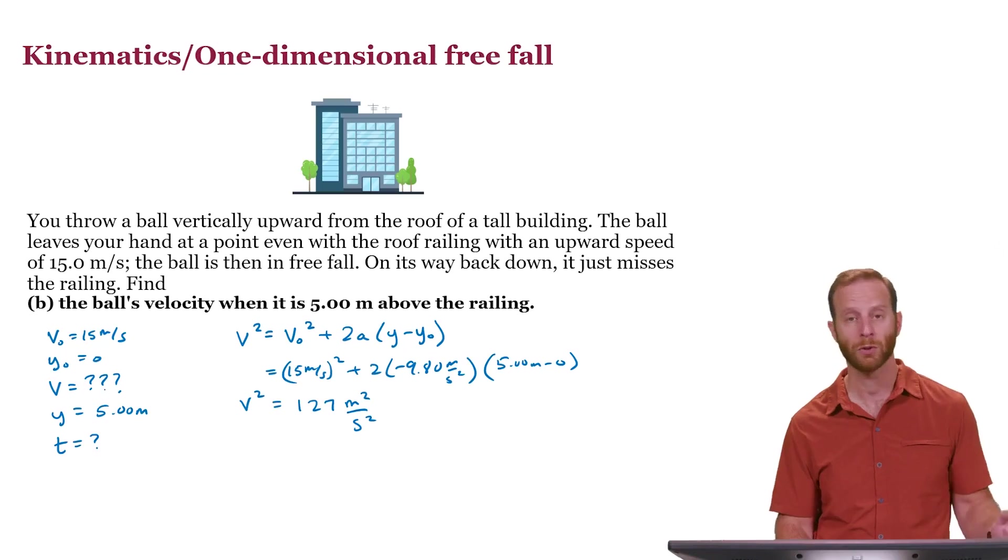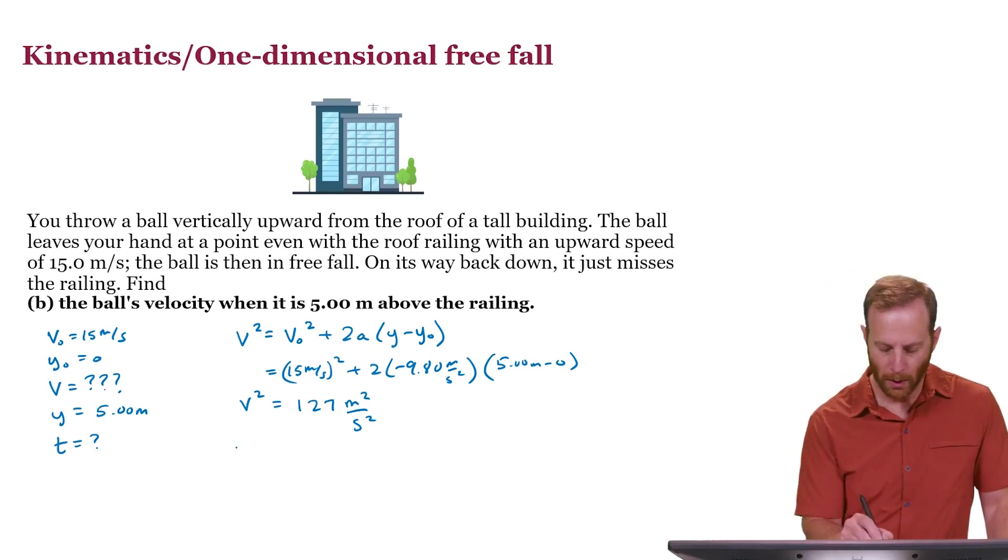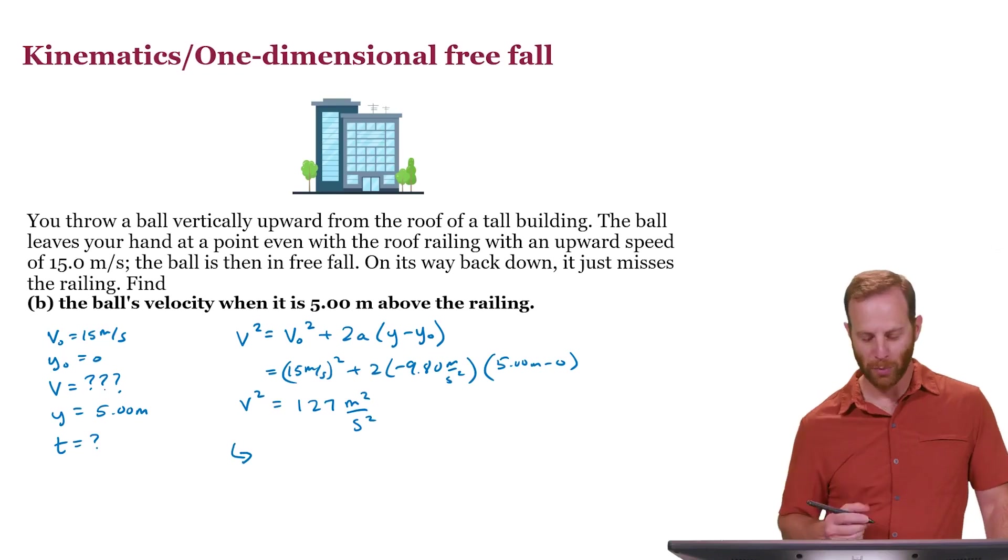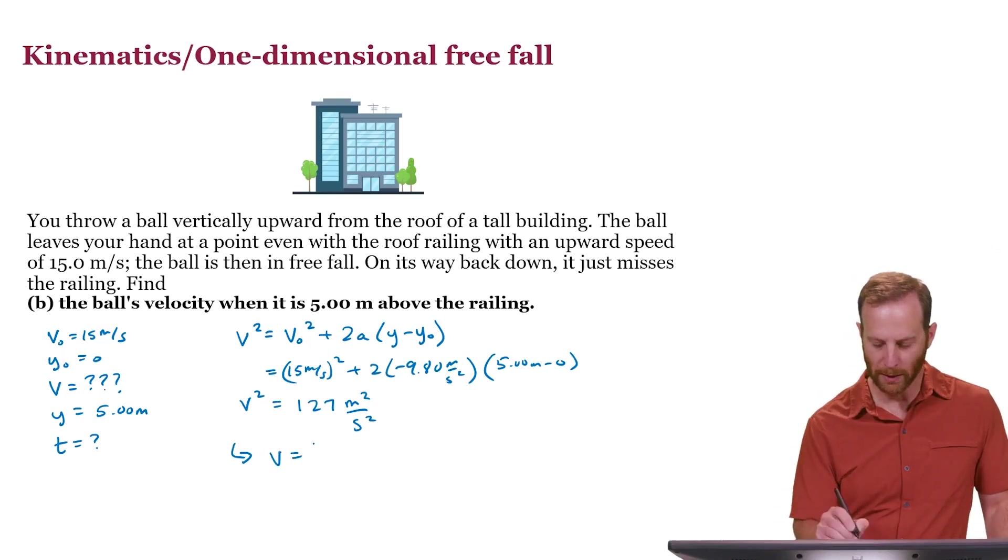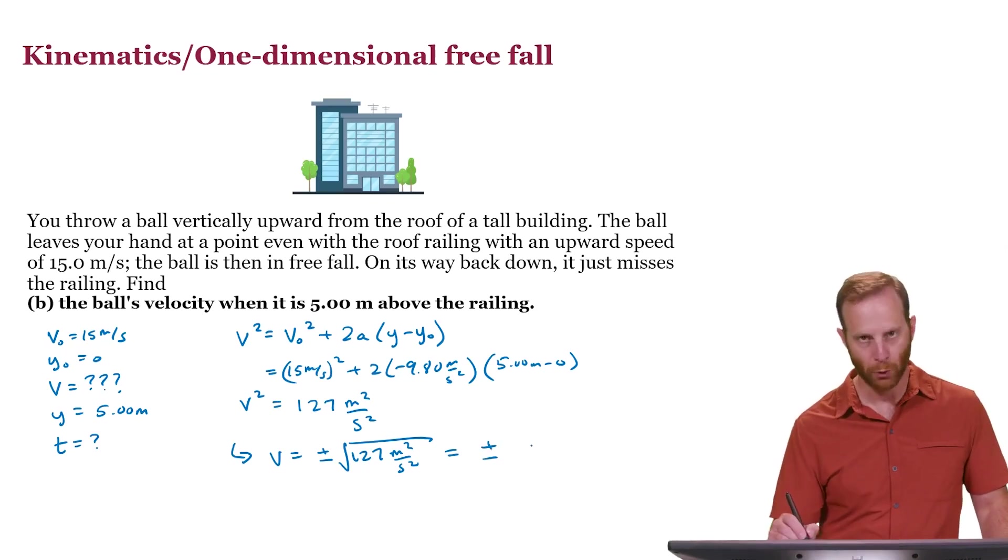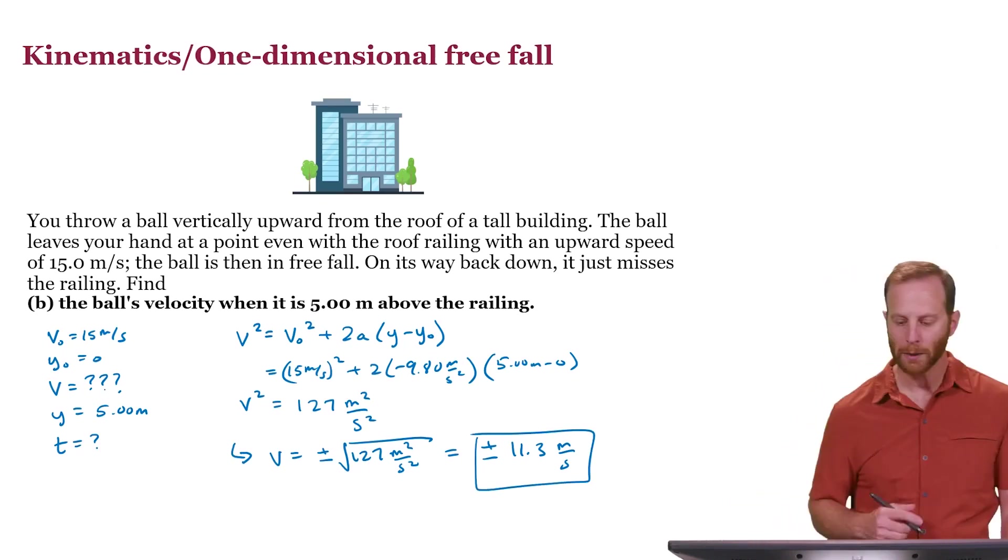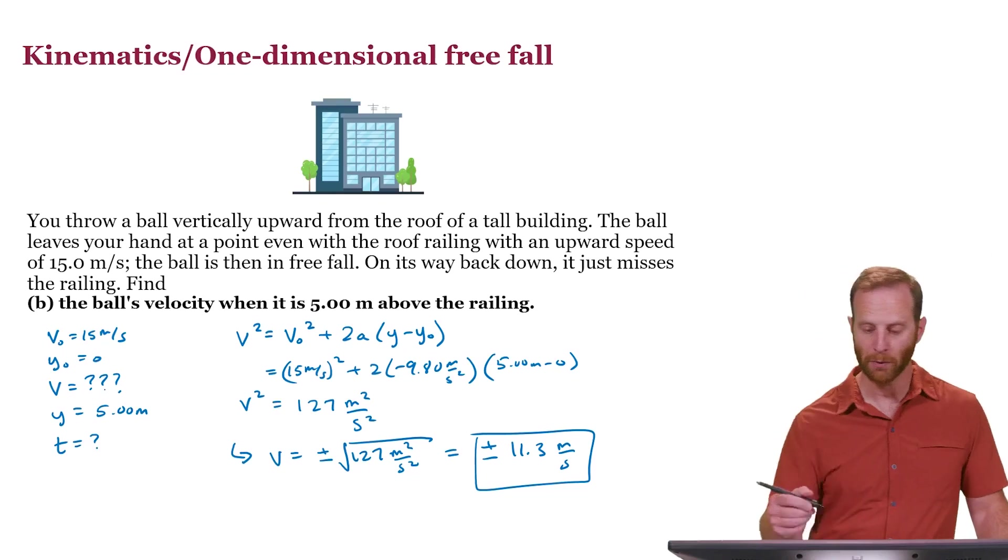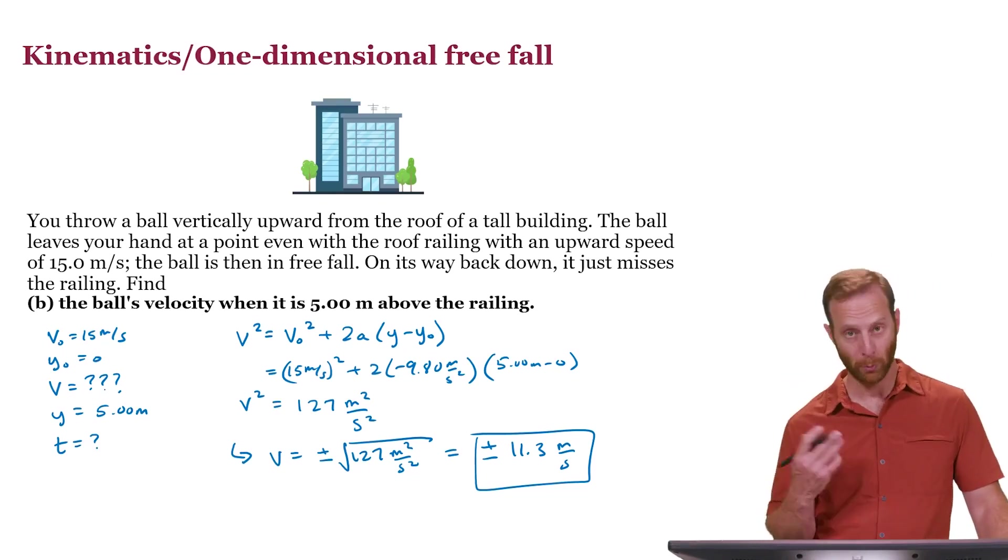The last thing to do is solve for v, and this is where you have to be careful. When you take the square root of both sides, you have to remember that technically the answer could be plus or minus the square root of that number, 127 meters squared per second squared. That plus or minus is important physically, because there are actually two possible answers to this problem. The number you get, 11.3, and the meters squared over second squared, square rooted becomes meters per second. This is correct. It should be plus or minus, because when the ball is 5 meters above the railing, it could be on its way up, which would be the positive solution, or it could be on its way down, which is the negative solution.